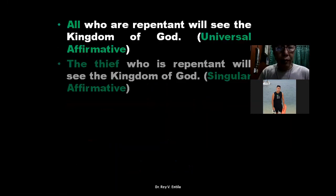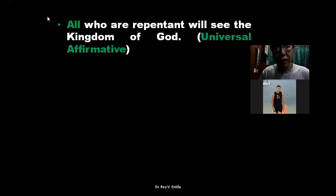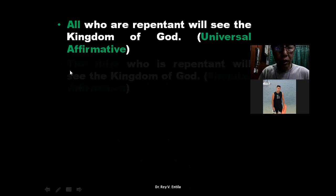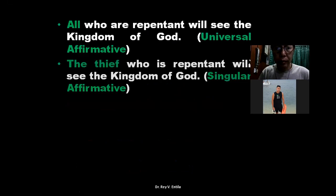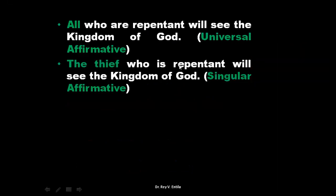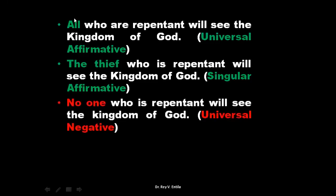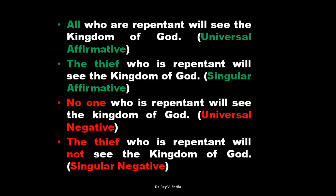Next example: 'All who are repentant will see the kingdom of God' — universal affirmative, that's A. Its contrary is the universal negative. We also have the singular affirmative: 'The thief who is repentant will see the kingdom of God.' Opposed to the universal negative: 'No one who is repentant will see the kingdom of God' — and the singular negative: 'The thief who is repentant will not see the kingdom of God.'